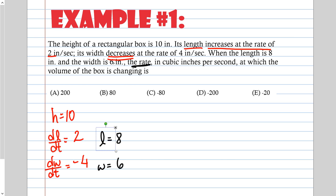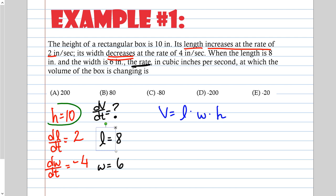When the length is 8 inches and the width is 6 inches, the rate at which the volume of the box is changing is what we need to find: dV/dt. The volume of a box is length times width times height. We have three variables here — that's not going to fly.